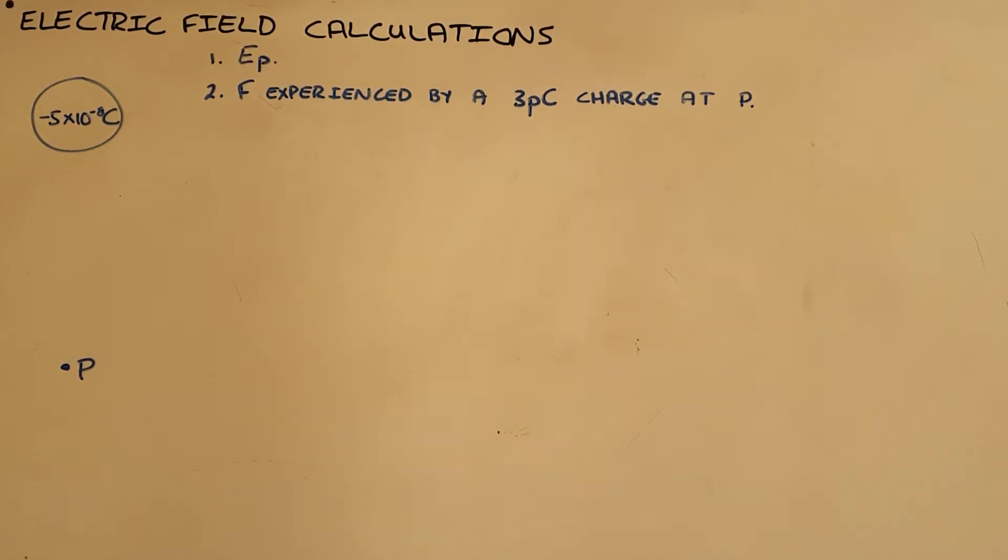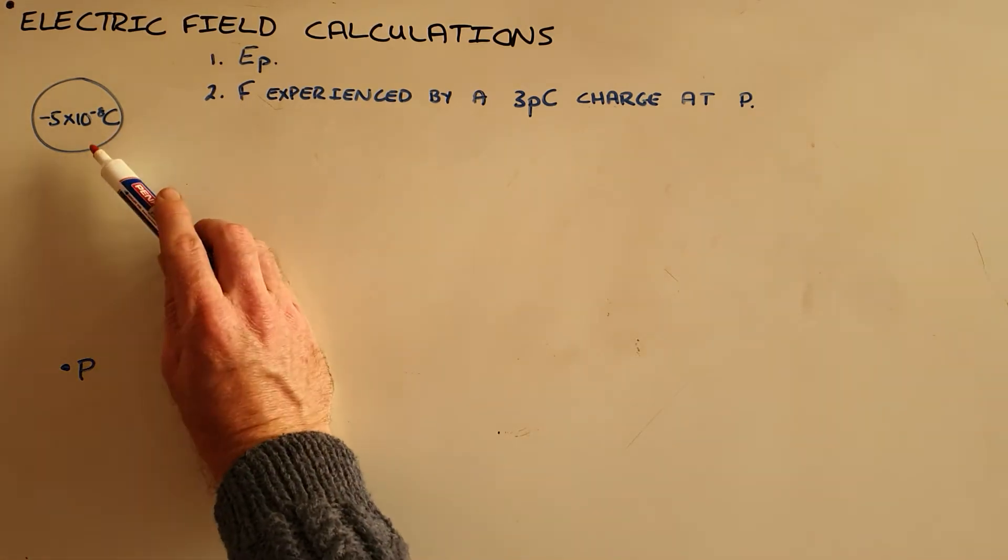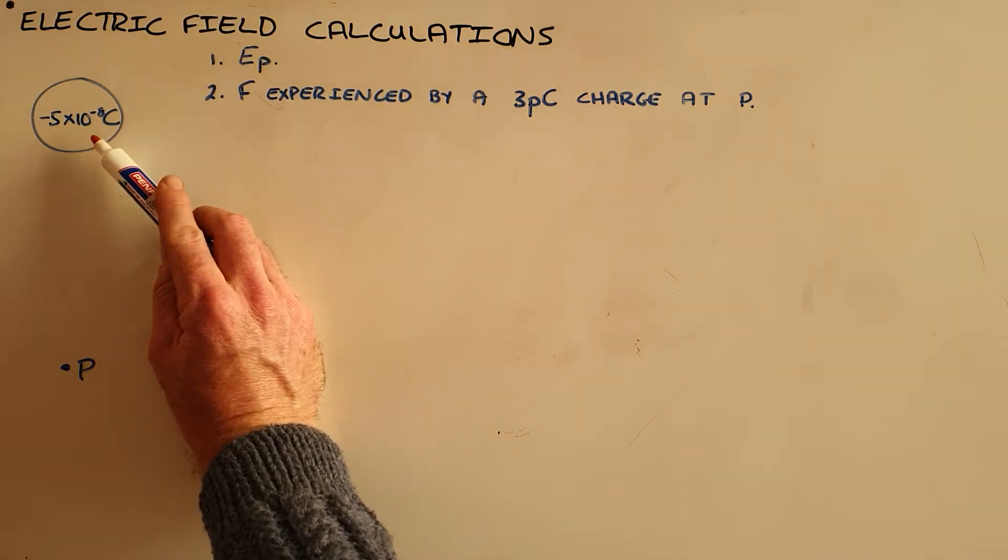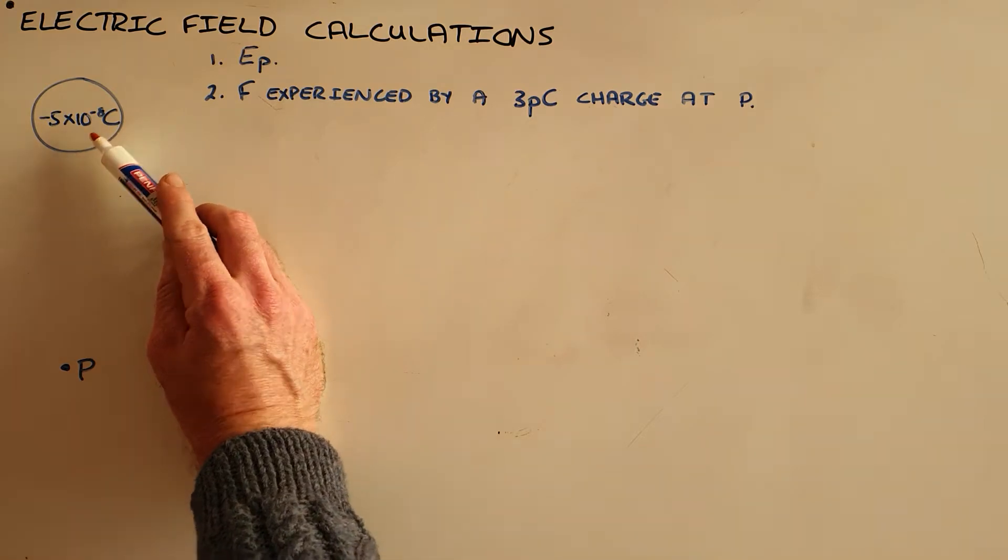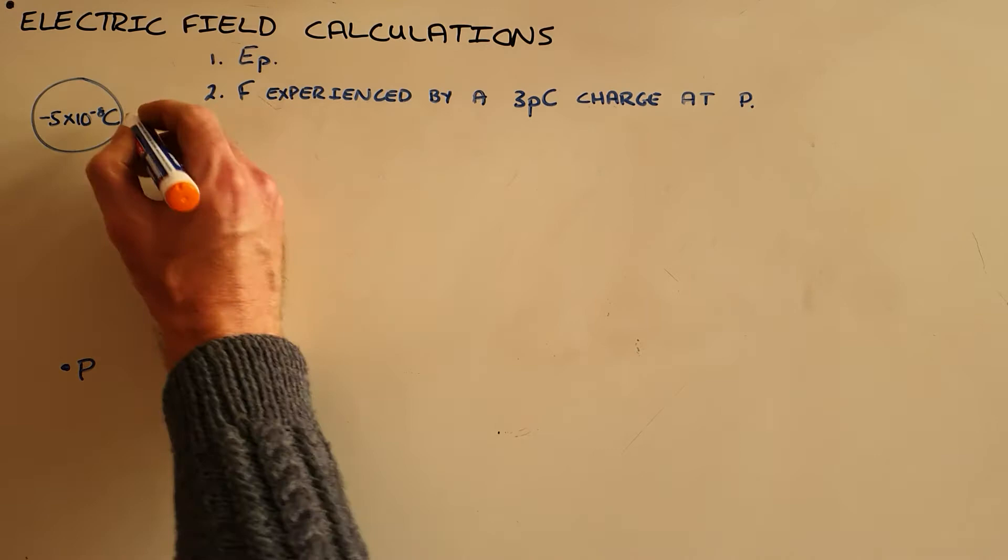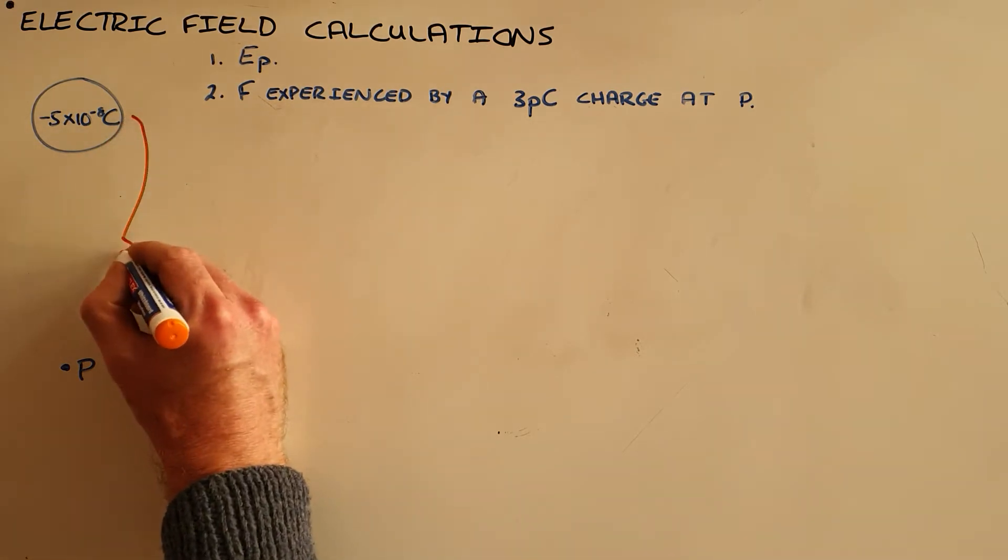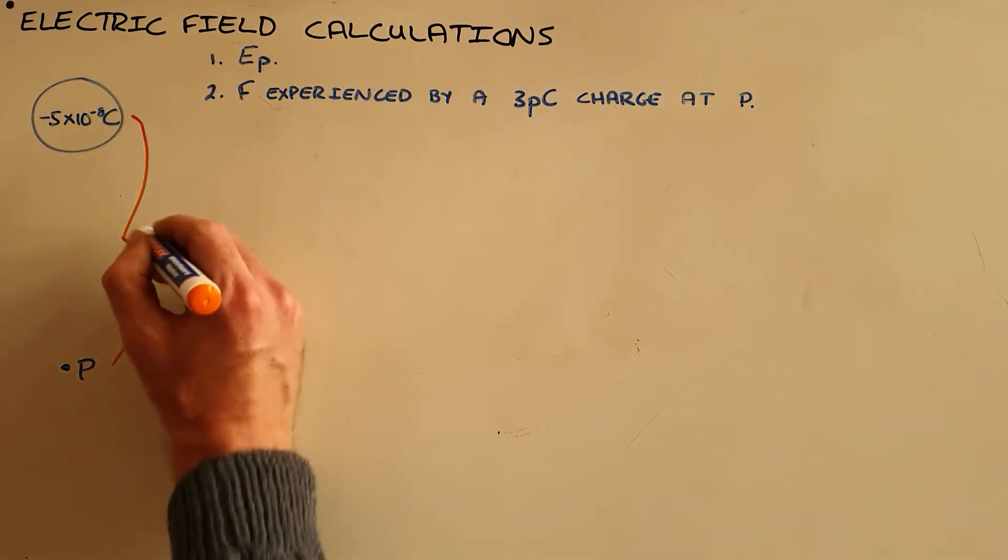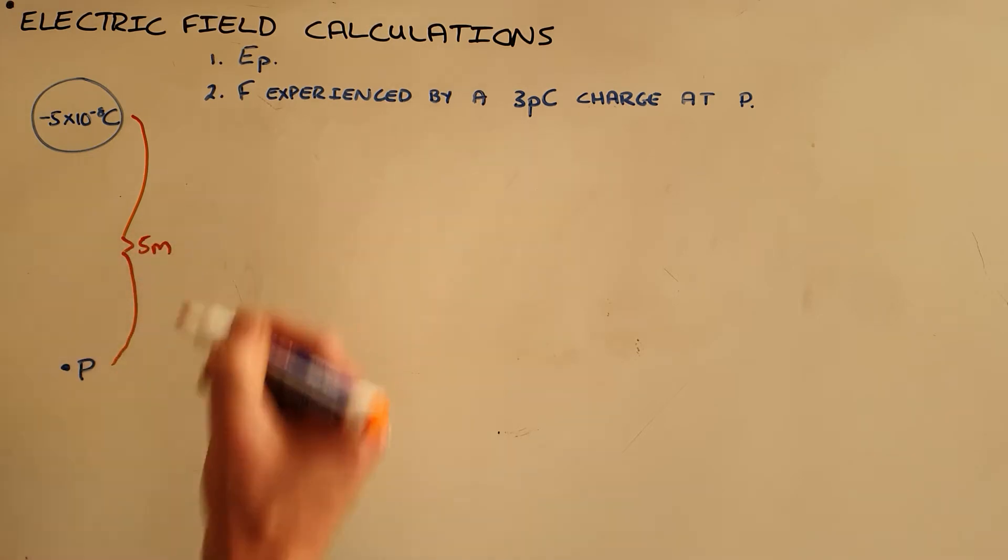A very common electric field calculation question would look something like this, where you are given a certain charge, in this case negative 5 times 10 to the negative 8 coulombs, and asked to calculate the electric field at a point P a certain distance away. In this example we are going to say 5 meters away.